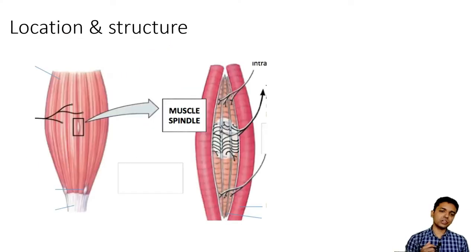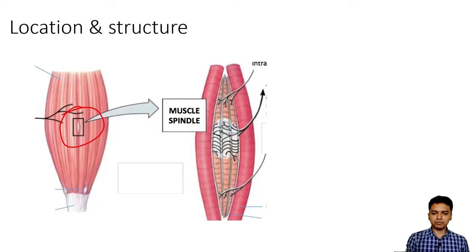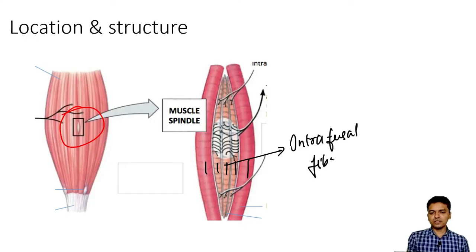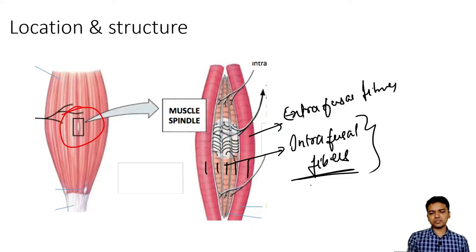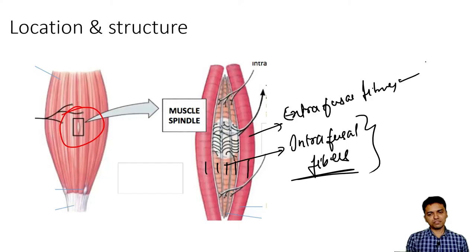So let us know the location — where is it located? Of course, it is located inside the muscle. As you are seeing, if I am parting away the fibers of the muscle, inside I am seeing these fibers. These fibers are running parallel to the fibers of the muscle. These fibers are called as intrafusal fibers — these are the fibers of the muscle spindle — in order to differentiate them from the fibers of the muscle which are causing contraction, which are called as the extrafusal muscle fibers.